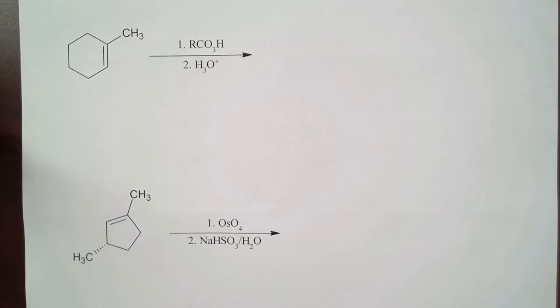I want to look at four quick examples from chapter 7 of organic chemistry. So the first one here we've got an alkene and it's reacting with a peroxy acid followed by H3O+.